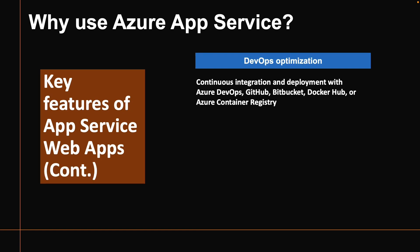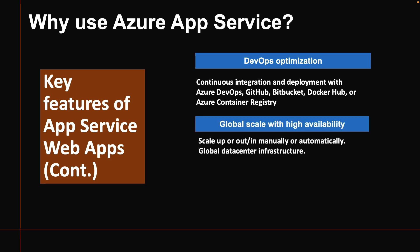Another feature is DevOps optimization. You can set up continuous integration and deployment with Azure DevOps, GitHub, Bitbucket, Docker Hub, or Azure Container Registry, and promote updates through test and staging environments. You can manage your apps using Azure PowerShell or the cross-platform CLI. App Service also provides global scale with high availability — scale up or out manually or automatically — hosting your apps across Microsoft's global data center infrastructure with a high-availability SLA.